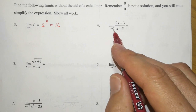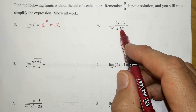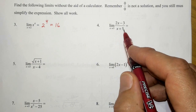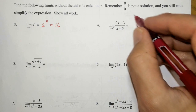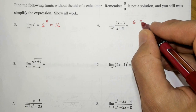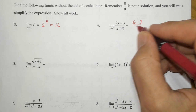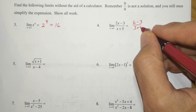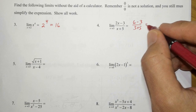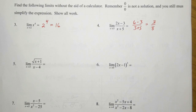With problem number four, the limit as x approaches three of two x minus three over x plus five. So we have two times three, or six minus three, over three plus five, for a final answer of three-eighths.